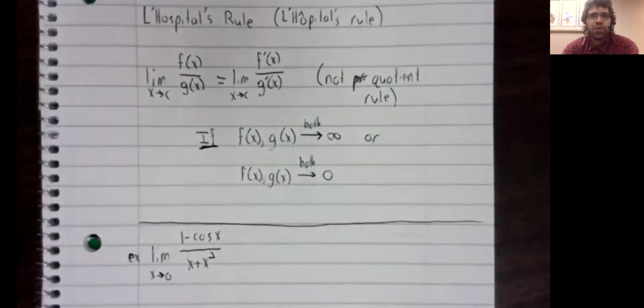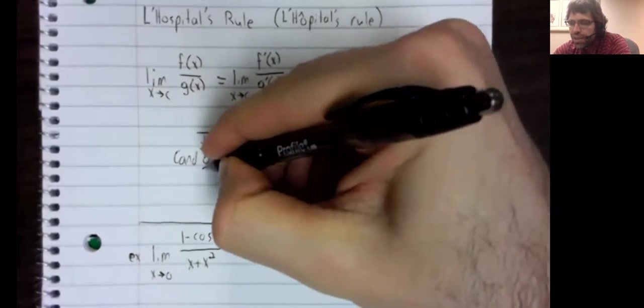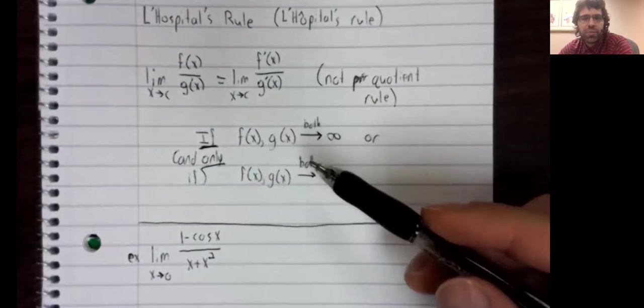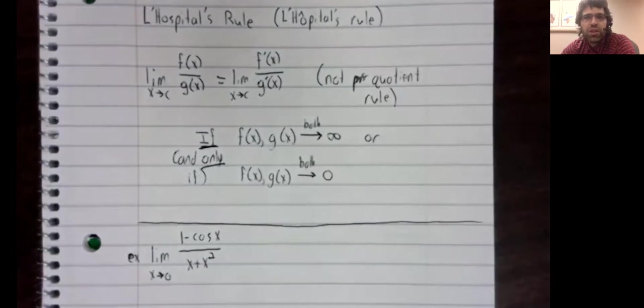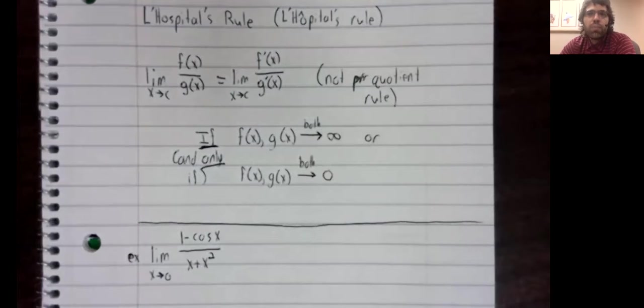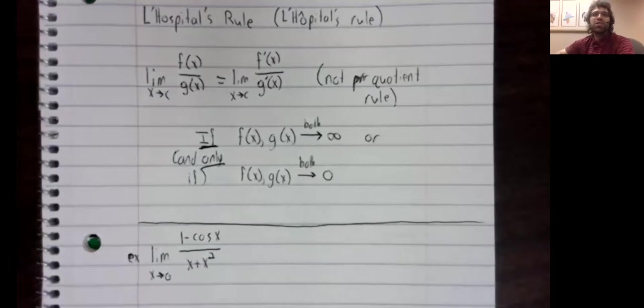Let's compute this limit. Now, to use L'Hopital's rule, we need to be in one of these two forms. And it's easy for a student to get out of the habit of checking whether we are in one of these two forms, because, of course we are. It's the L'Hopital's rule section. But you really need to verify that L'Hopital's rule applies before you use it.